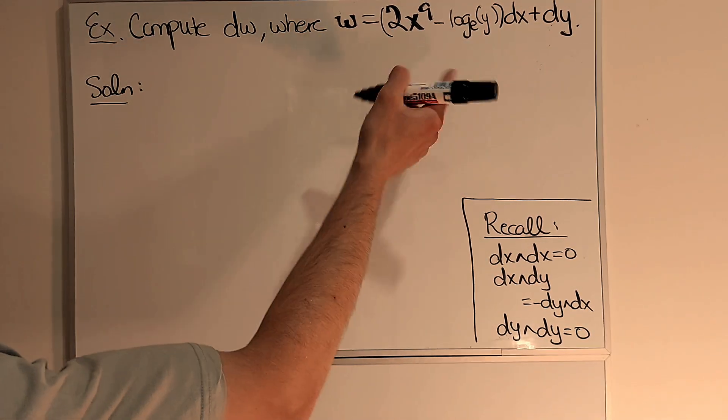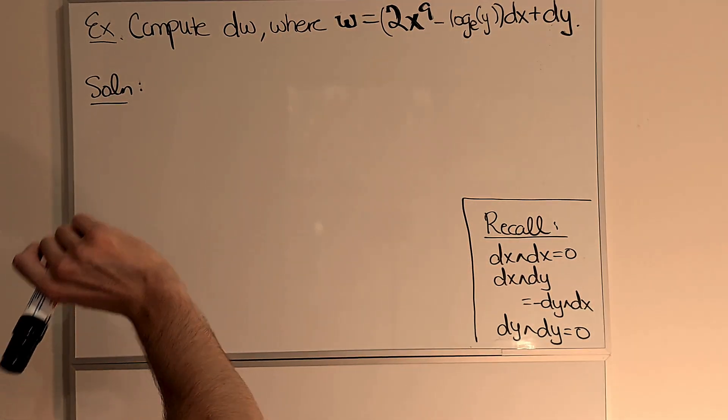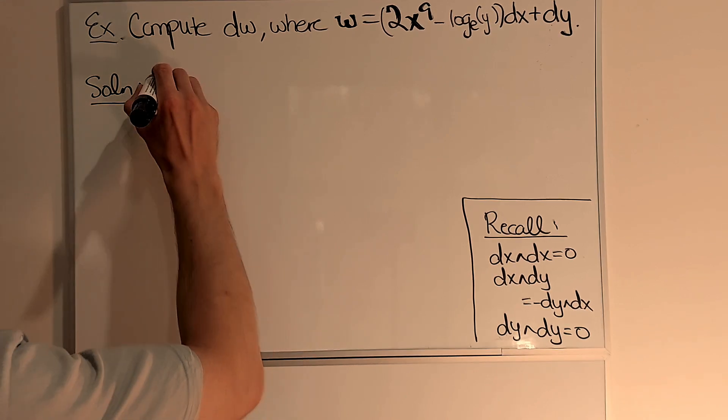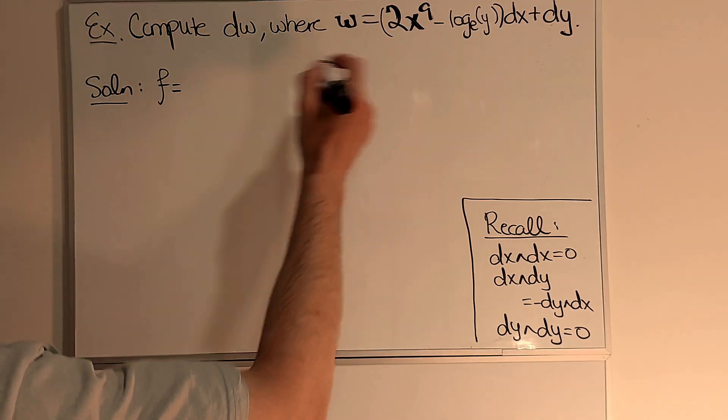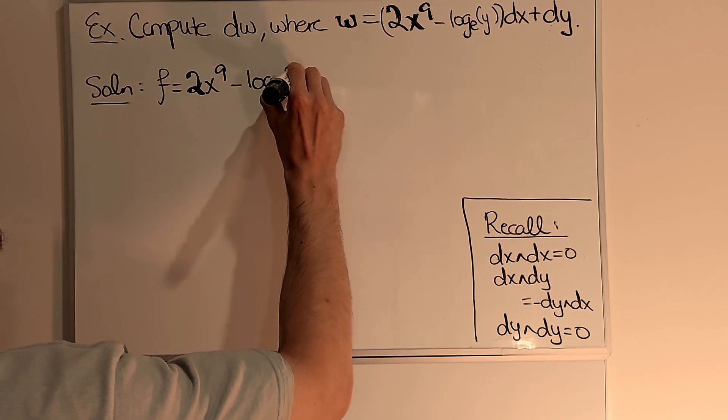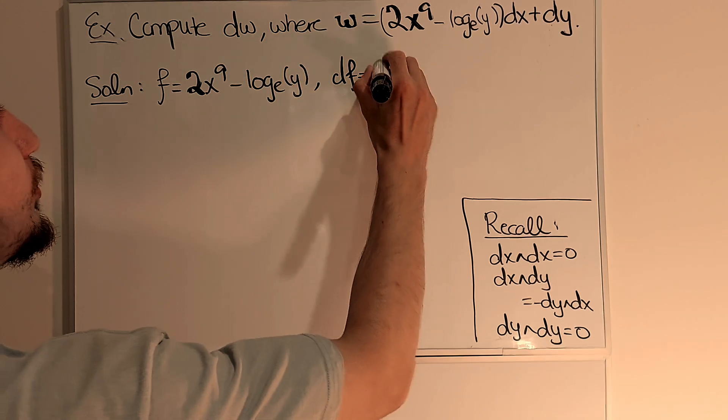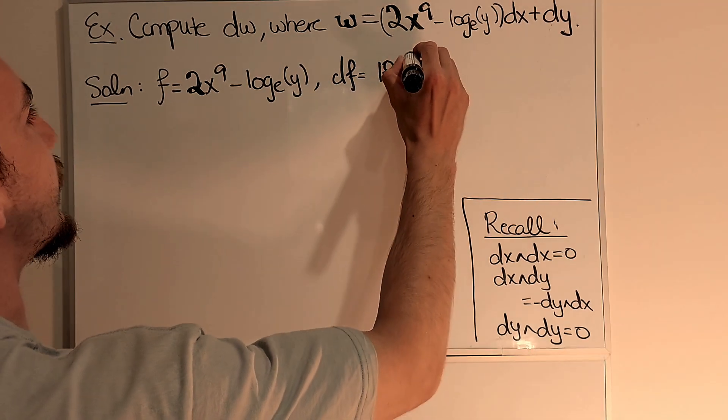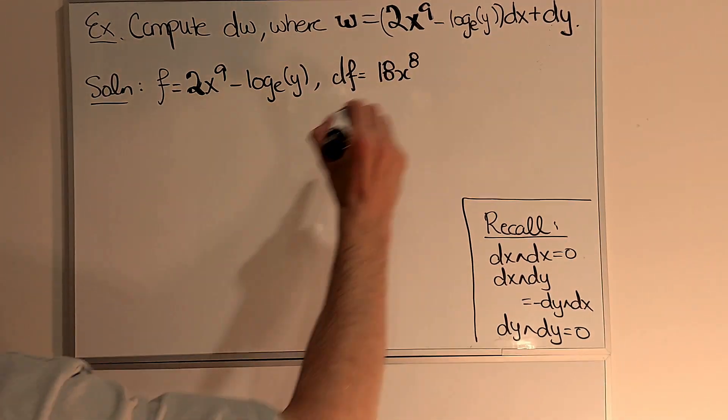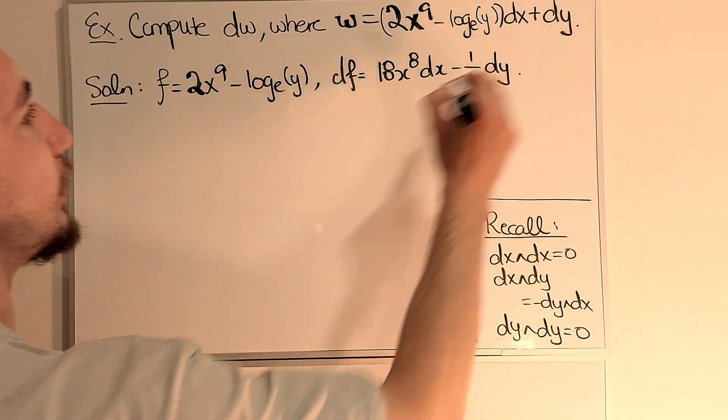So the trick is to just look at the component functions and compute the exterior derivative as per normal. So if I let f be 2x to the 9 minus log ey, then I know that the exterior derivative is just 18x to the 8 dx minus 1 over y dy.